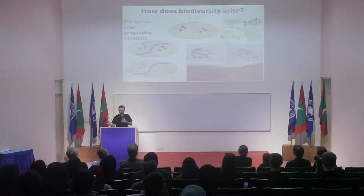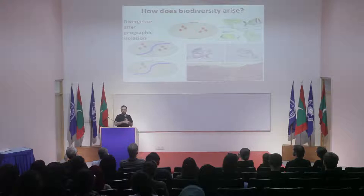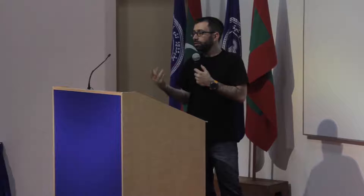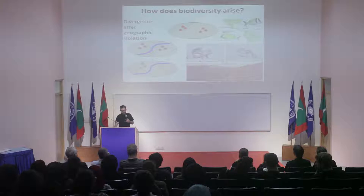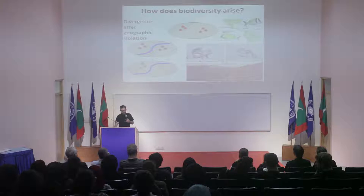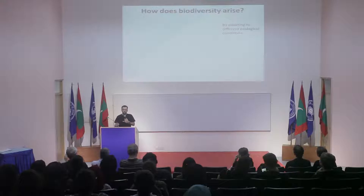Another example with terrestrial systems: two species of squirrels living in the US, one on each side of the Grand Canyon. From genetic data and phenotypic differences — for instance the tails are not of the same color — we know that the divergence between these two species is consistent with the formation of the Grand Canyon.